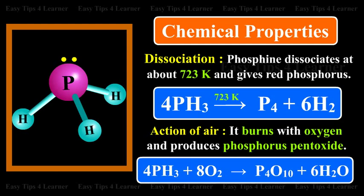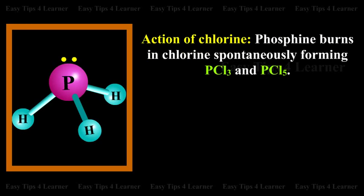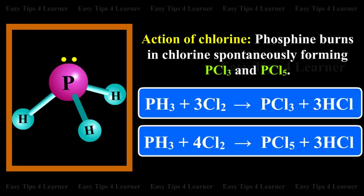Action of Air: It burns with oxygen and produces phosphorus pentoxide. Action of Chlorine: Phosphine burns in chlorine spontaneously, forming phosphorus trichloride and phosphorus pentachloride.